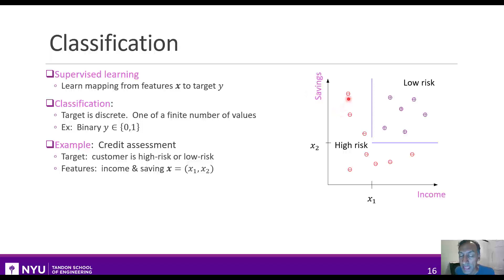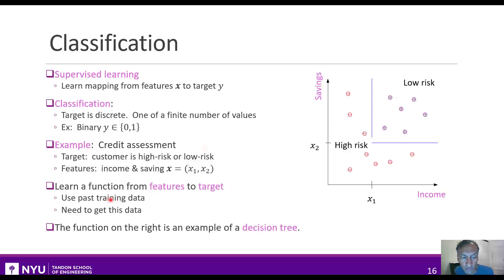We could label the points with one color, red, for the customers that have high risk, and another color, purple, for the customers that have been low risk — maybe determined by whether they defaulted on a prior loan or something like that. What we want to do in the supervised learning problem is to learn the function that maps these features to these targets, looking at income and savings to predict if the customer is high risk or low risk.